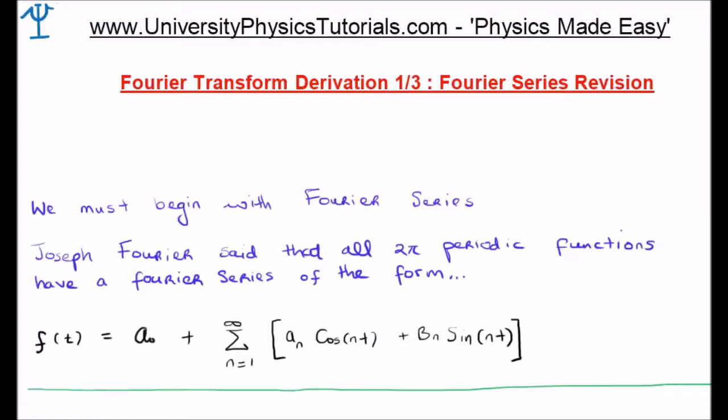So let's begin. So, like I said, in order for us to derive the Fourier transform, we must begin at Fourier series. Joseph Fourier suggested that all two pi periodic functions have what's known as a Fourier series, and the Fourier series is of the form written on the bottom of your screen.